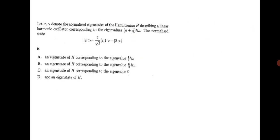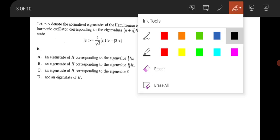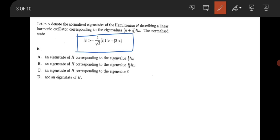The next question is from quantum mechanics. They are stating that n is a normalized eigenstate of Hamiltonian describing a linear harmonic oscillator of energy (n + 1/2) ℏω, and the normalized wave function is given as ψ = 1/√5 times 2|1⟩ minus |2⟩. Will it be an eigenfunction of Hamiltonian?